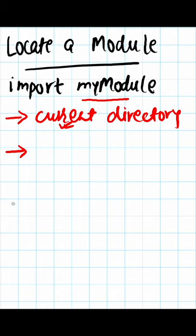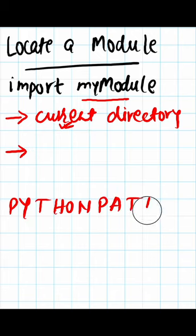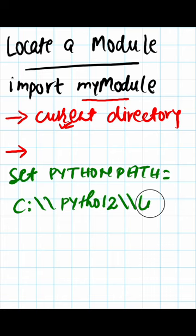It will search in directories mentioned in the Python path variable. And you are allowed to set this Python path variable by writing set python path equals to your directory. And if this file is not present in directories mentioned by this Python path, it will continue.